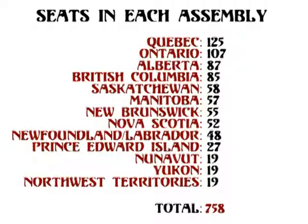Quebec has 125 seats, Ontario has 107, Alberta has 87, British Columbia has 85, Saskatchewan has 58, Manitoba has 57, New Brunswick has 55, Nova Scotia has 52, Newfoundland and Labrador have 48, PEI has 27, and each of the territories has 19.